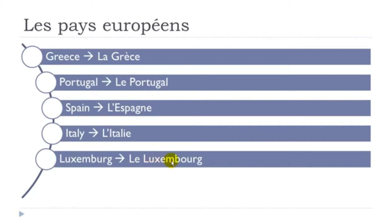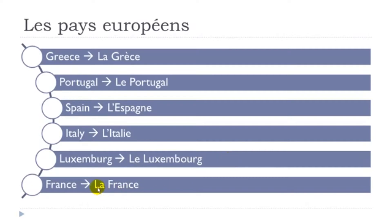Le Luxembourg. The final G is not pronounced, and when you combine E and M here you get the nasal sound 'en'. You don't pronounce the M at all — it's a nasal sound: 'en'. Le Luxembourg. La France. The A-N here produces the nasal 'en'. La France.